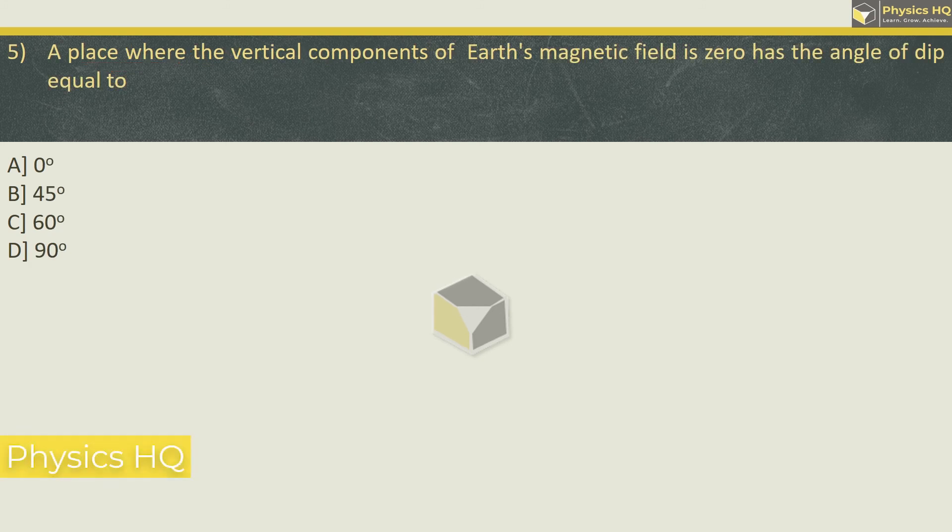Next MCQ: a place where vertical component of earth's magnetic field is 0 has an angle of dip equal to how much? Now try to recall that relation. What did we say? Tan δ is equal to BV upon BH. Here we see the vertical component is 0.